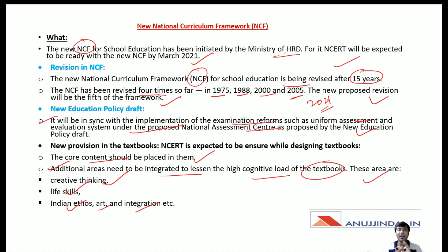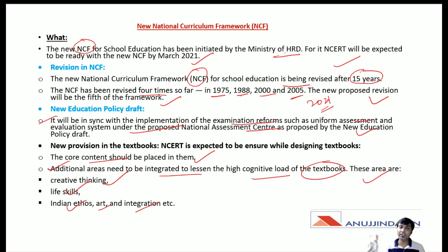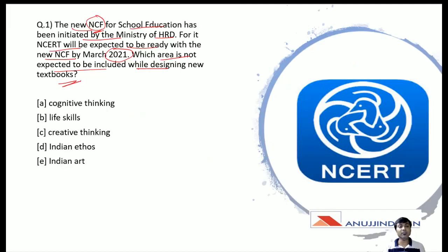These additional areas are creative thinking, life skills, Indian ethos, art and integration, etc. When designing the new textbook, these new areas — creative thinking, life skills, Indian ethos, and Indian art and integration — will be included. The correct answer to which area is NOT expected to be included is Option A: Cognitive thinking.